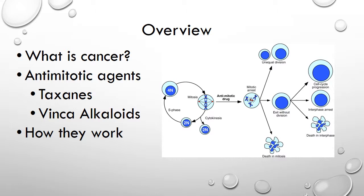Cancer is a group of over 100 different diseases categorized by rapid growth and development. Anti-mitotic agents, also called mitotic inhibitors, interfere with a cell's ability to divide properly. They affect the microtubules, which are the main component of cellular structure and the component that pulls apart when division should occur. There are two main types used to treat cancer: taxanes and vinca alkaloids. They are developed from natural products and through different mechanisms cause cell death.